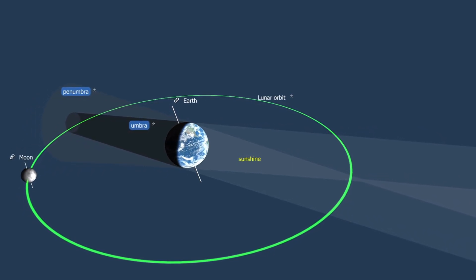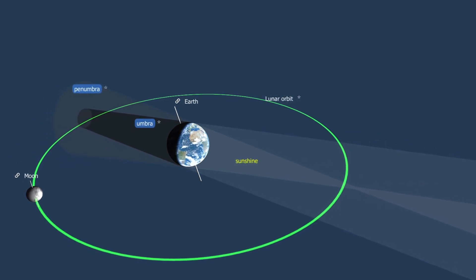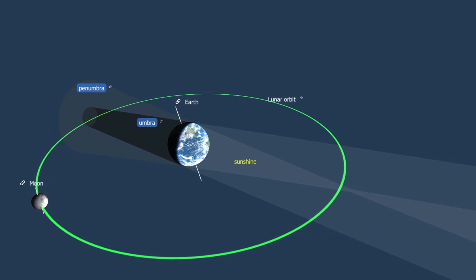In contrast, the external part of the Earth's shadow is a region where sunlight is only partially blocked. This part is called the penumbra.